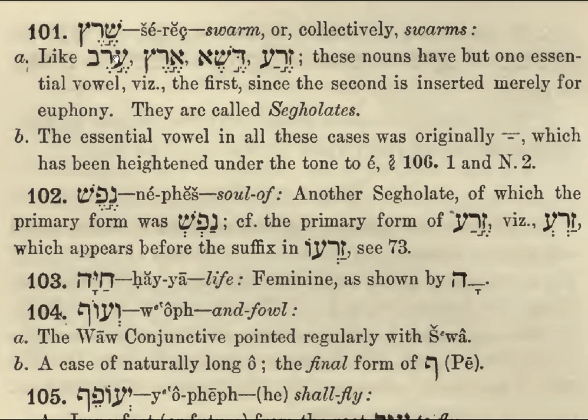Sherec — swarm, or collectively, swarms. And the accents here, like Ngereb, Ngerec, Deshe, Zerang. These nouns have got one essential vowel, and the second vowel is inserted for euphony — for making it sound better. So they are called segalates, because they are segol and segol. And the accent goes on to the first syllable: Ngereb, Ngerec, Deshe, and Zerang.